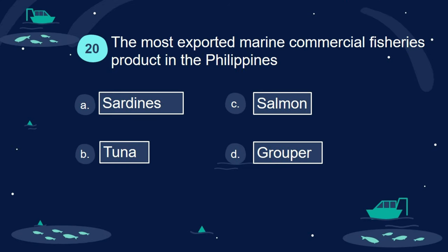Question 20. The most exported marine commercial fisheries product in the Philippines: A. Sardines. B. Tuna. C. Salmon. D. Grouper.